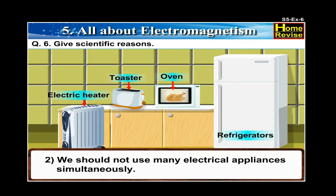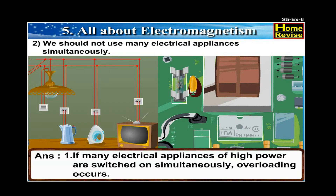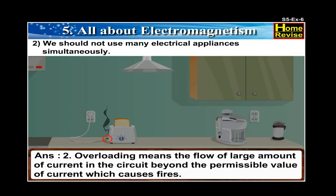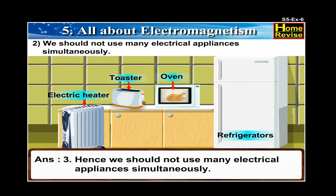2. We should not use many electrical appliances simultaneously. Answer: If many electrical appliances of high power are switched on simultaneously, overloading occurs. Overloading means the flow of a large amount of current in the circuit beyond the permissible value of current, which causes fires. Hence, we should not use many electrical appliances simultaneously.